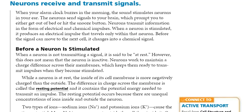Hello everybody, today we will continue explaining the nervous and endocrine systems. We already explained the neuron, its structure, and the function of neurons. Now today we will explain how the neurons receive and transmit signals. Consider when you wake up in the morning — the alarm on your phone will stimulate the neurons inside your ears, and this signal will go up to your brain, prompting you to either get out of bed or hit the snooze button.